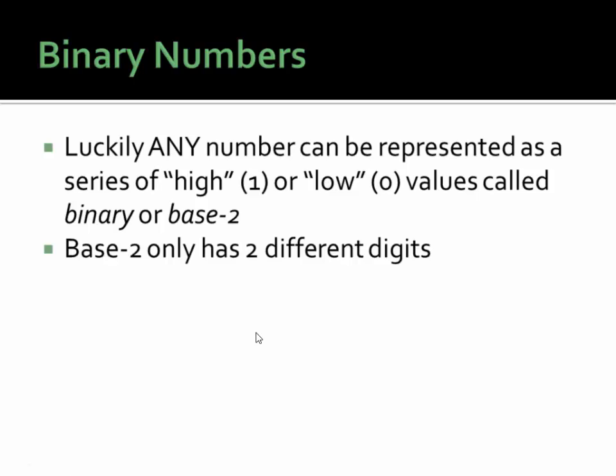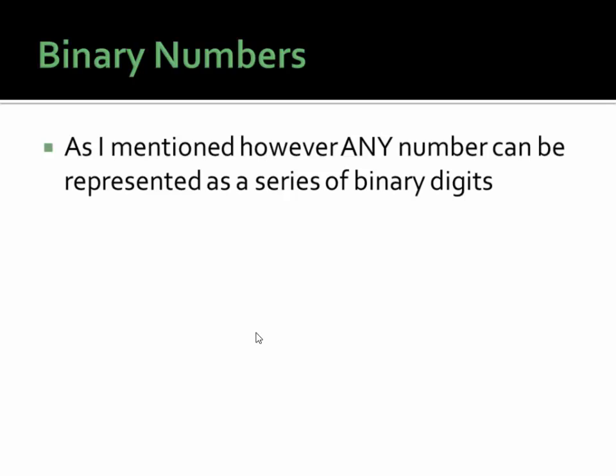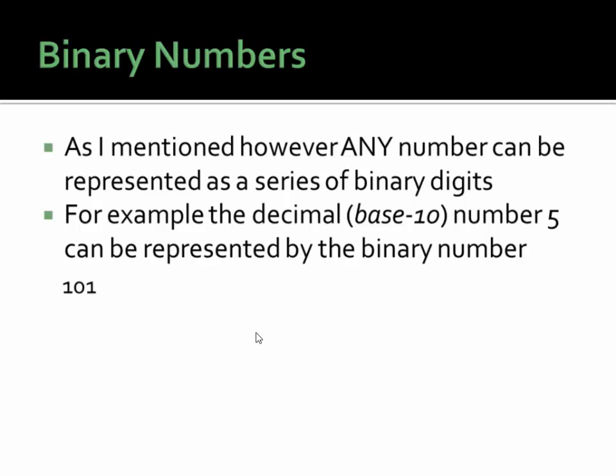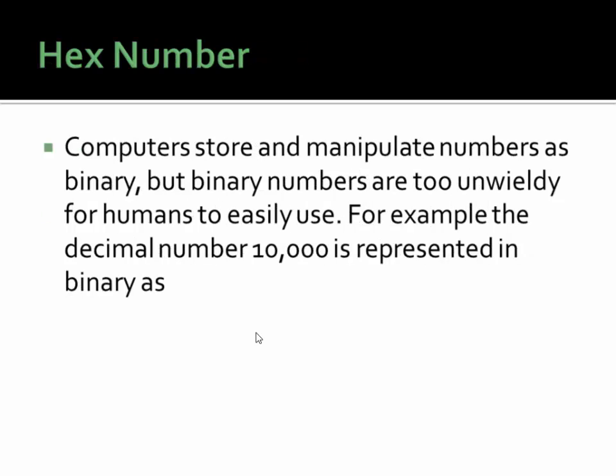Base two only has two different digits: one and zero. But any number can be represented as a series of binary digits. For example, the decimal or base ten number five can be represented by the binary number 101. Now, binary numbers are great and computers use them to store and manipulate numbers, but for humans binary numbers are just too unwieldy. For example, the number ten thousand in decimal is represented in binary as a very long string of digits, and as the number gets bigger, the number of binary digits gets longer and longer.